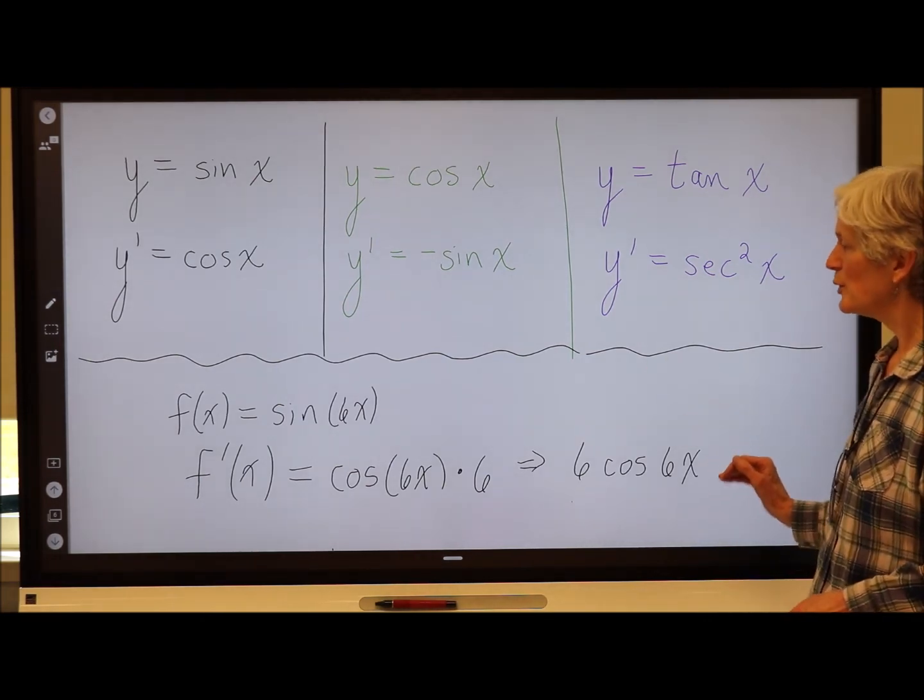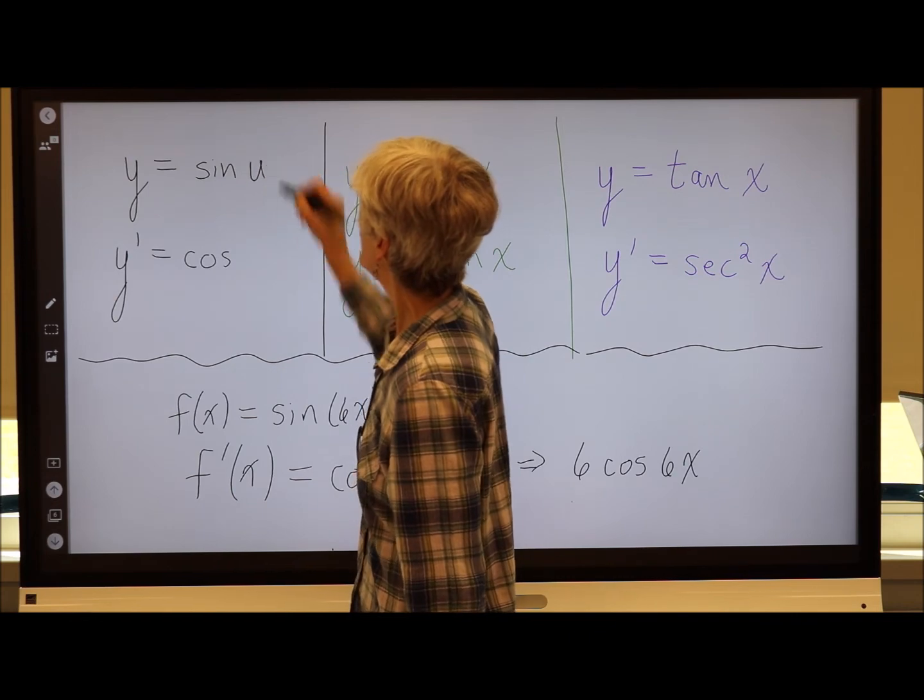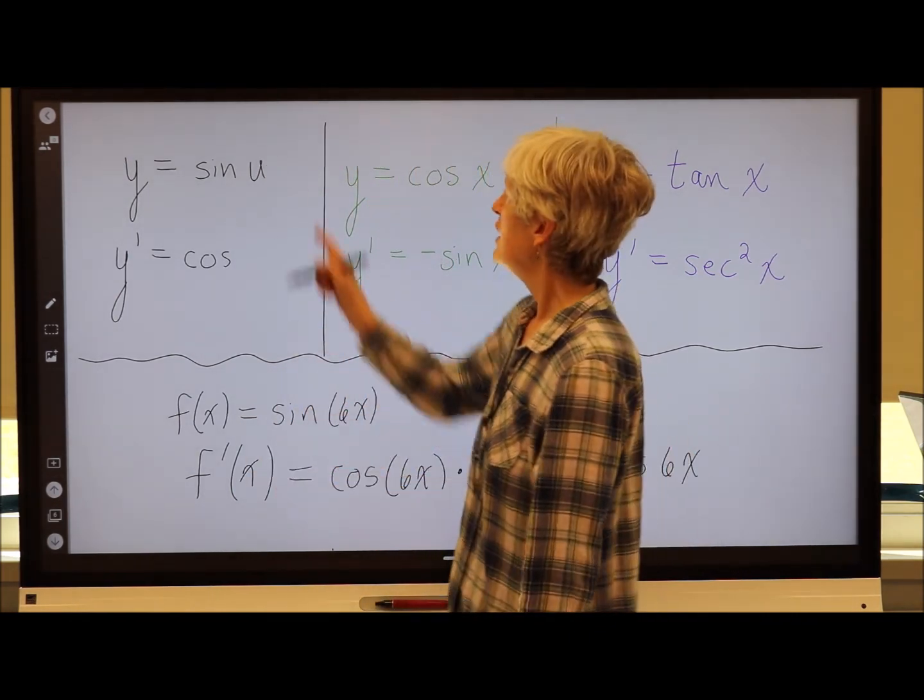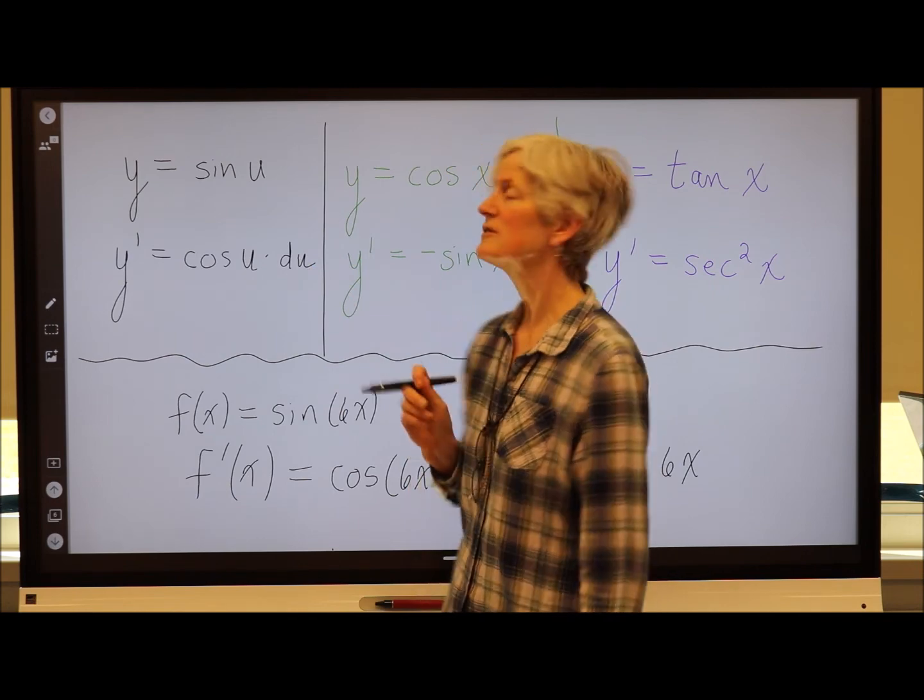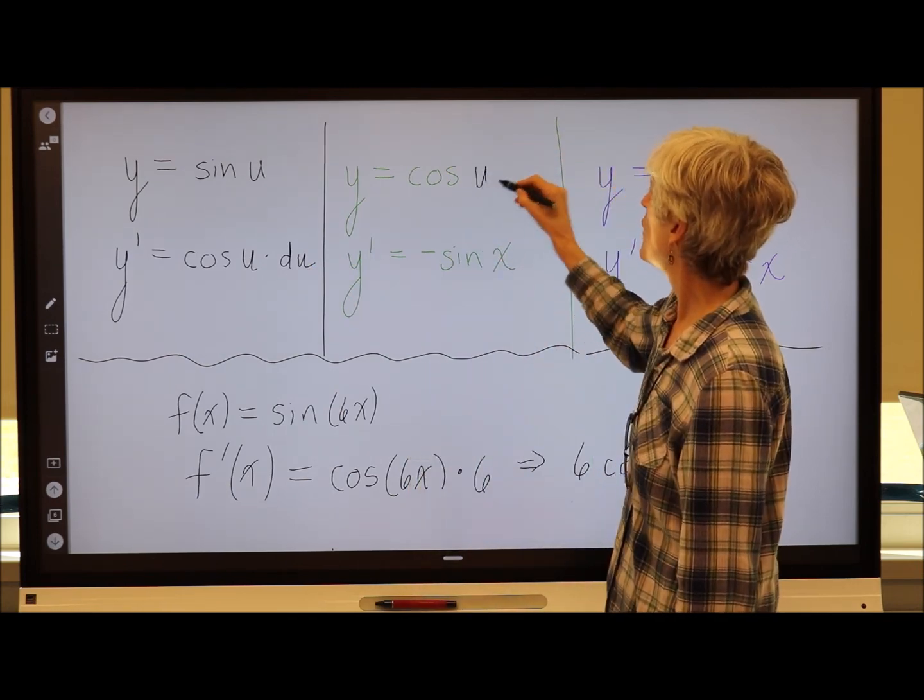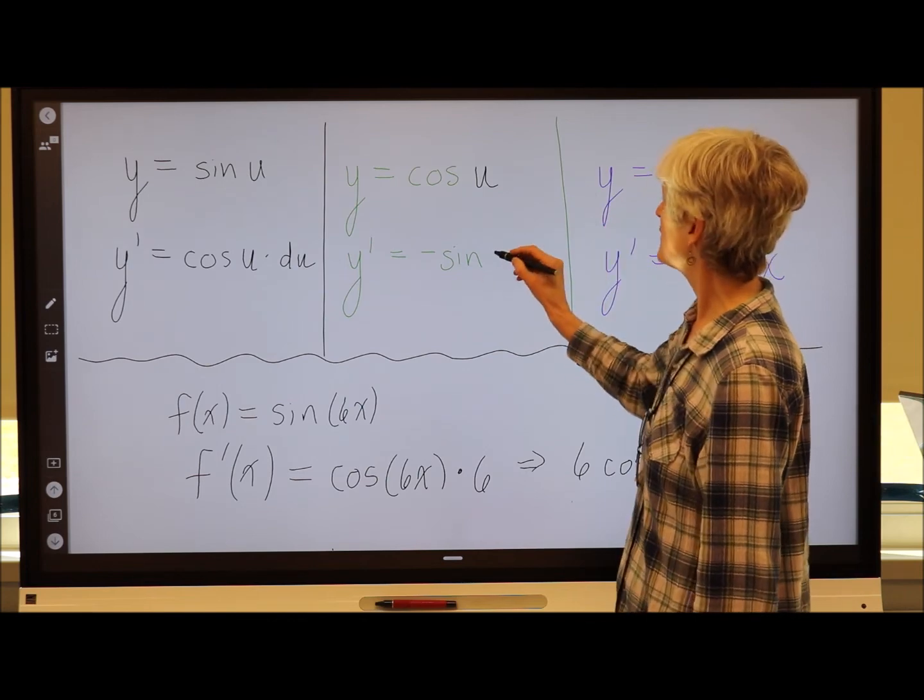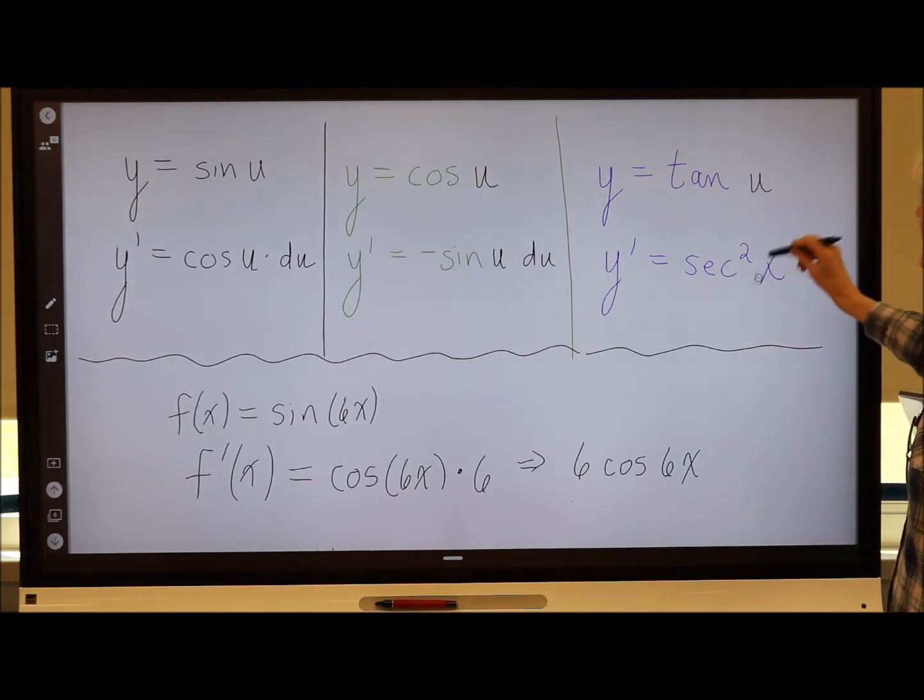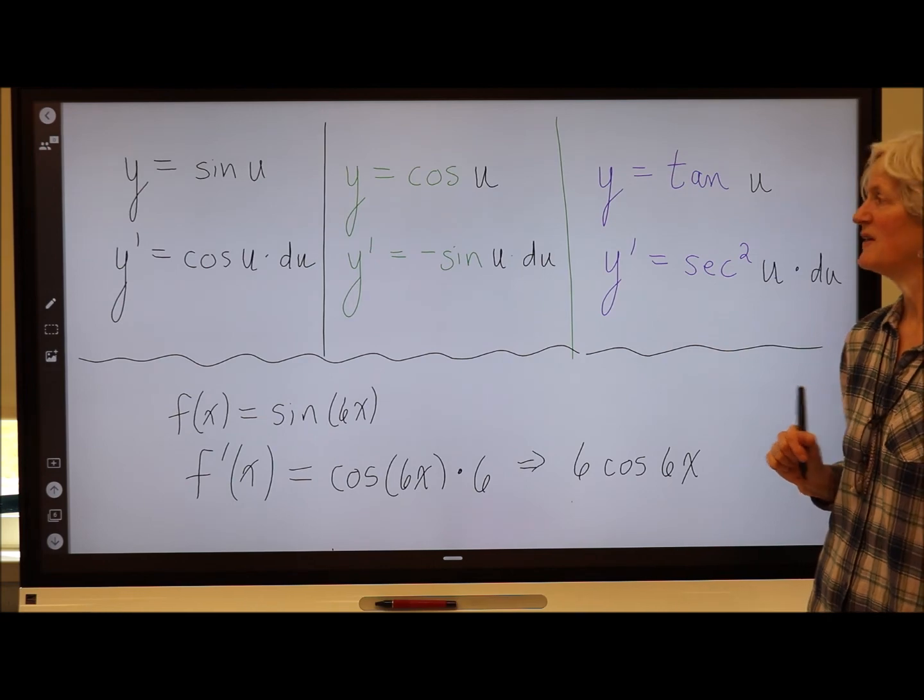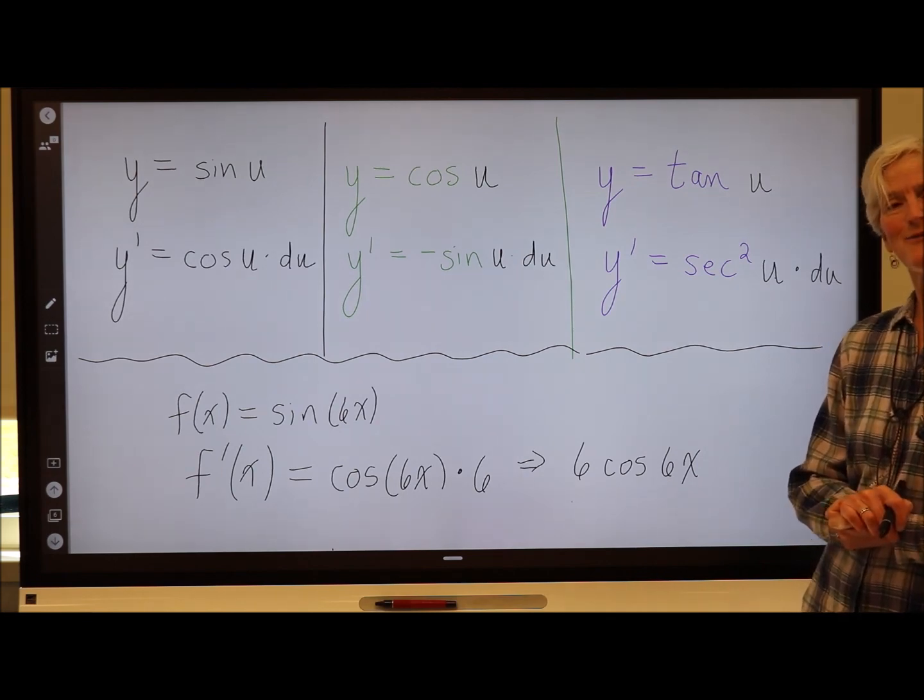So sometimes when you see these rules, instead of seeing x's here, we'll put something like a u, where u is understood to be some function in terms of x. So the derivative of sine of u is cosine of u times the derivative of u. That's the chain rule piece. If I'm finding the derivative of y equals cosine of u, where u is some function in terms of x, my derivative would be negative sine of u times the derivative of that u. And so too with a tan. So sometimes you'll see these shortcut rules for finding derivatives in terms of u rather than x. That's how we find the derivative of these three trig functions. We'll see you next time.